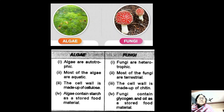Hello, good morning dear students. Today I am going to talk about the difference between algae and fungi. Algae are autotrophic, meaning they can synthesize their own food, whereas fungi cannot synthesize their own food, so they are known as heterotrophic. Most of the algae are aquatic, and in case of fungi, they are terrestrial.